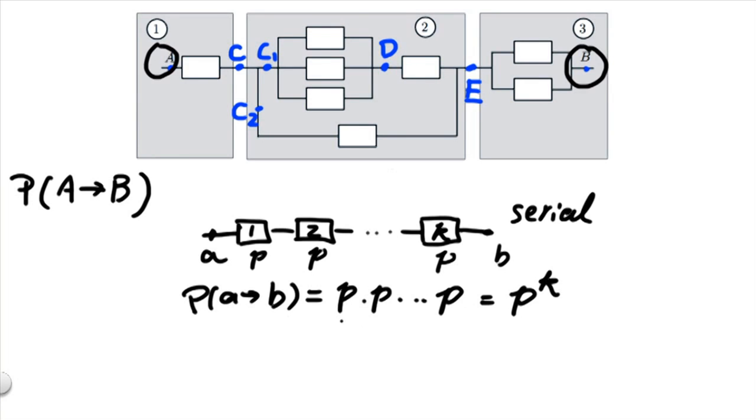Note that the reason we can write the probability this way, in terms of this product, is because of the independence property.